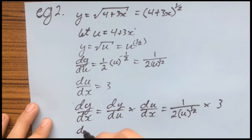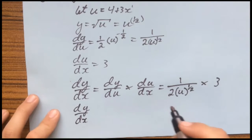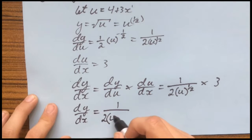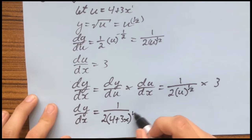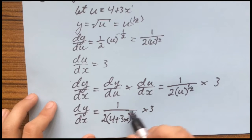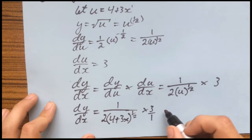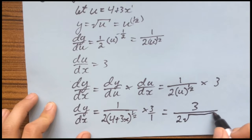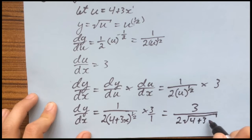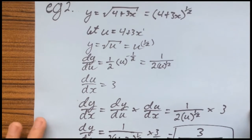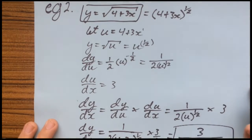Now we sub u back in, which leaves 1 over 2 times (4 plus 3x) to the power of a half, multiplied by 3. You can simplify this further by converting the power of a half back to a square root, and because the 3 is multiplied to the fraction you can bring it to the numerator. So that gives 3 over 2 times the square root of (4 plus 3x). And that is the first derivative. Thank you.